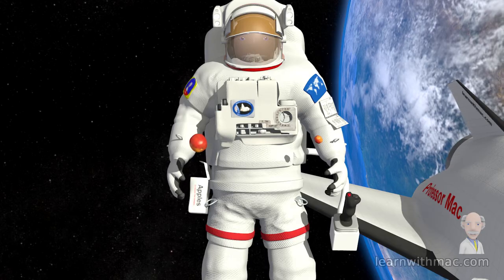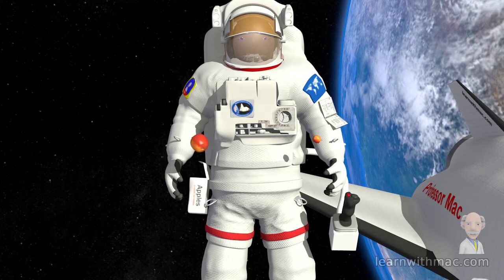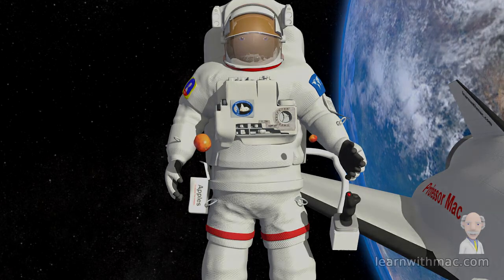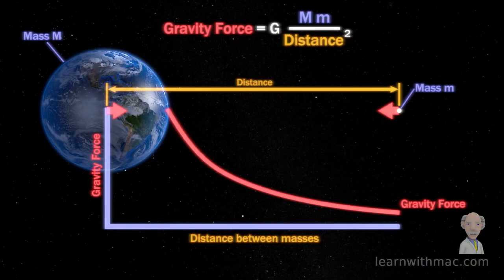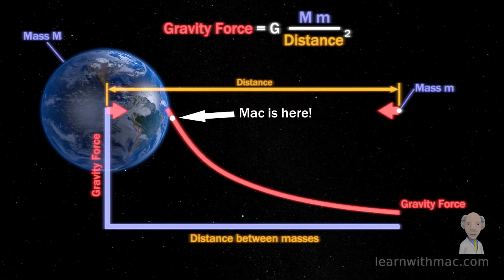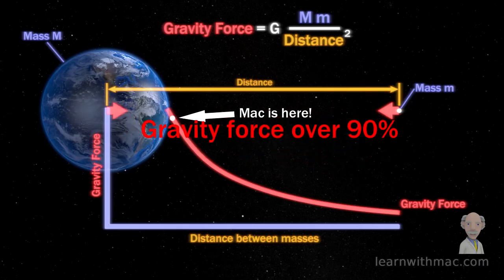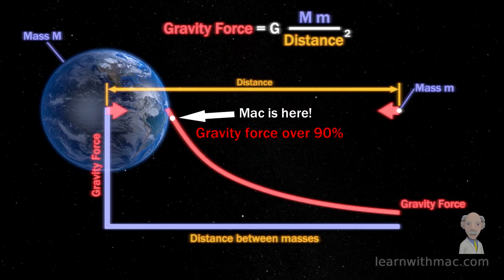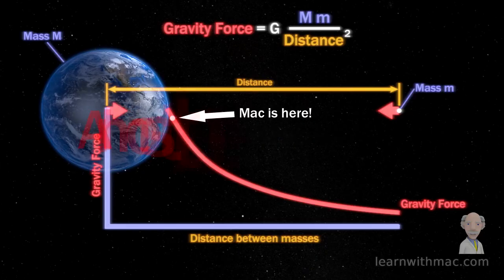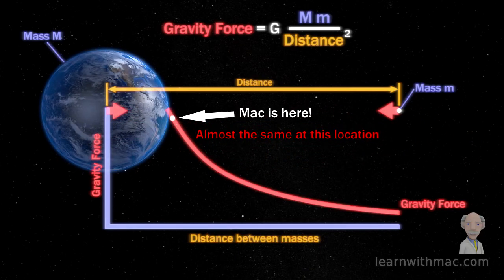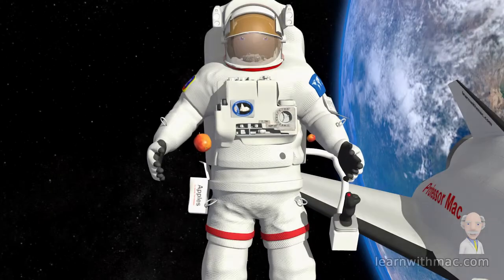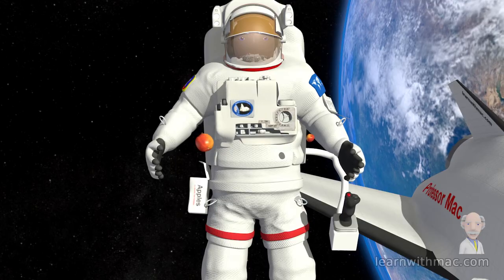So the size of the gravitational force up here depends on how close we are to Earth. We are actually this close to Earth, and Newton's Law of Universal Gravitation tells us that the gravity force is just over 90% of that on the surface of Earth. So in other words, almost the same force at this location in space as it is on the surface of Earth. So there is gravity in space.